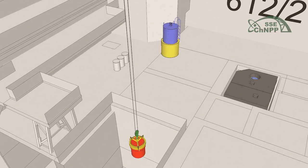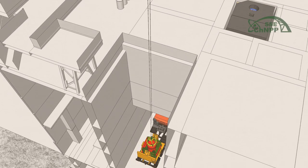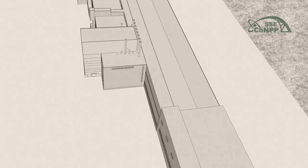The design of the long-length waste cutting facility should envisage the possibility to decontaminate the equipment, enable visual monitoring, and prevent the spread of radioactive substances.